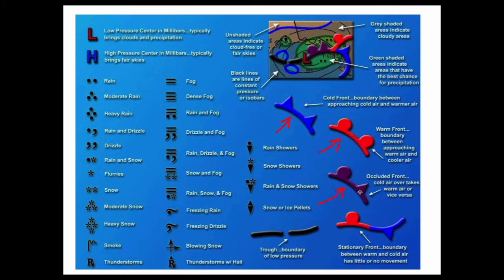The air masses behave a little differently. We have a stationary front where you have a red section, a blue section, alternating, and then a trough. You can pause this and take a look at these symbols.